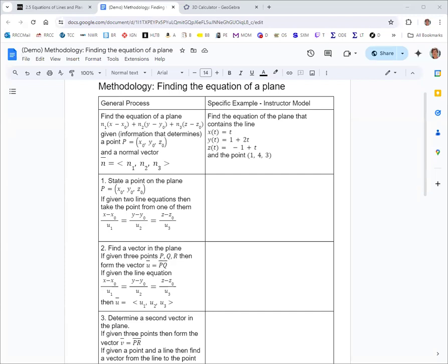So step 1 is to state a point on the plane. You might be given that like we are, and it's easy, but you might have to find it from a line or something like that. So we're just going to use the point we have right there. We'll call that point P. And I have a note there about if you're just given two line equations.